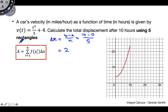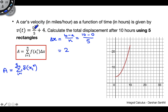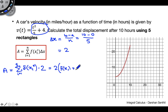Now we can lay out what this formula is going to be. Our area is going to be the sum from i equals 1 to 5 — because we're using n equals 5 rectangles — of f of x sub i star times delta x, which we can write as times 2. Factoring out the 2, we get 2 times the quantity f of x sub 1 plus f of x sub 2 plus f of x sub 3 plus f of x sub 4 plus f of x sub 5.